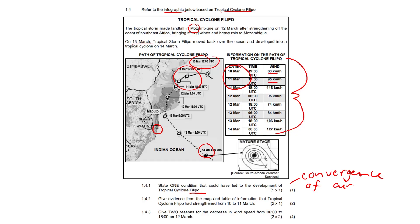And 1.4.3: Give two reasons for the increase in wind speed from six in the morning to six in the evening on the 12th of March here. So dos versus dos.